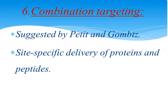Next is combination targeting. Patit and Gomes in 1998 suggested this term for site-specific delivery of proteins and peptides. This targeting system is equipped with carriers, polymers and homing devices of molecular specificity that could provide a direct approach to the target site. Modification of proteins and peptides with natural polymers such as polysaccharides or synthetic polymers may alter their physical characteristics, favoring targeting to specific compartments, organs or tissues within the vasculature. Thank you very much.